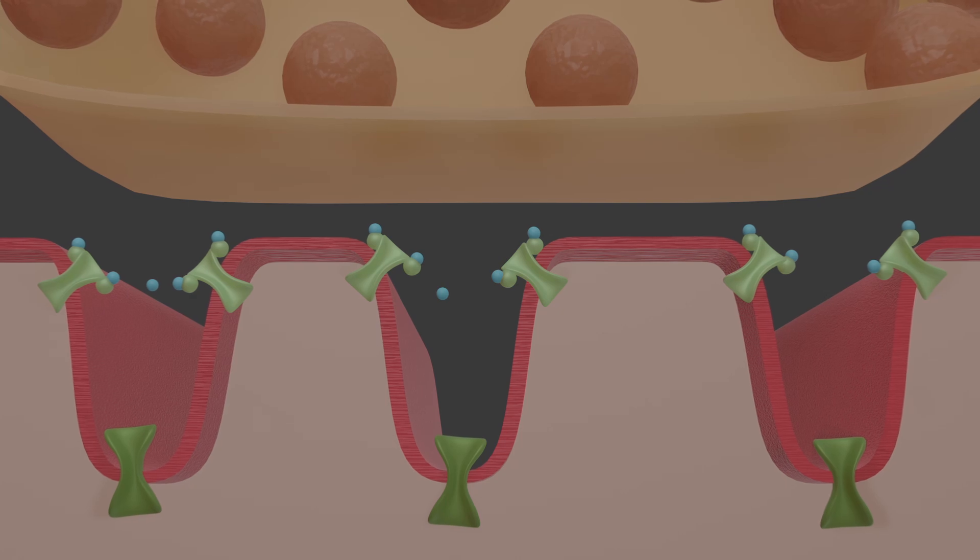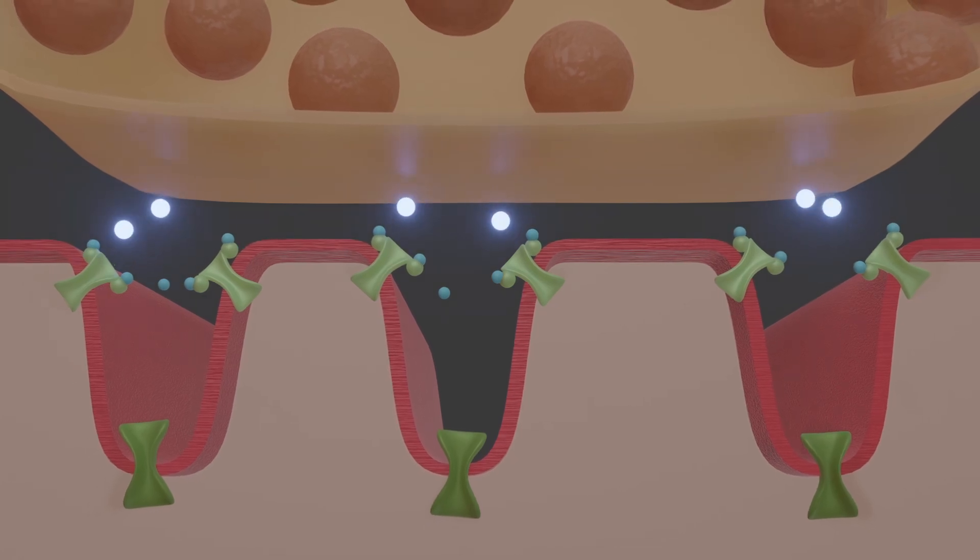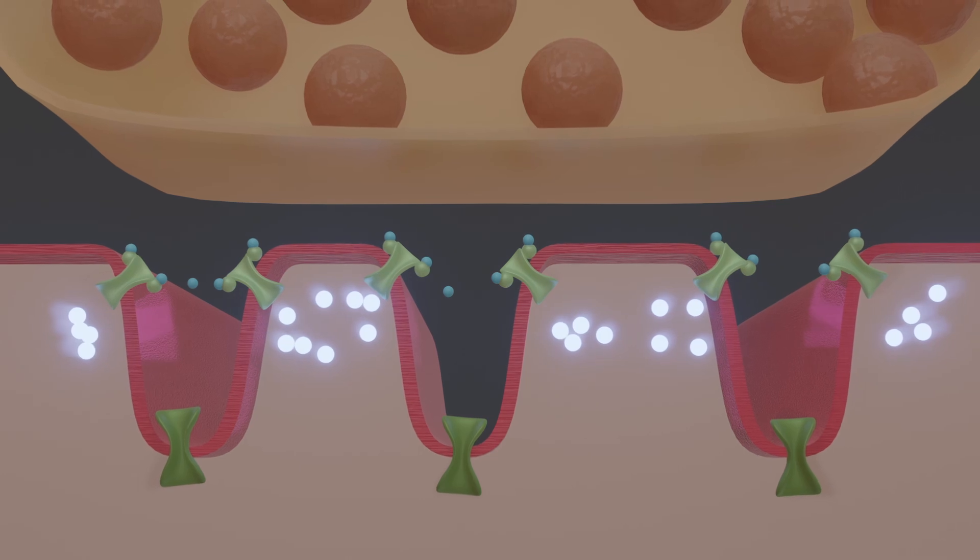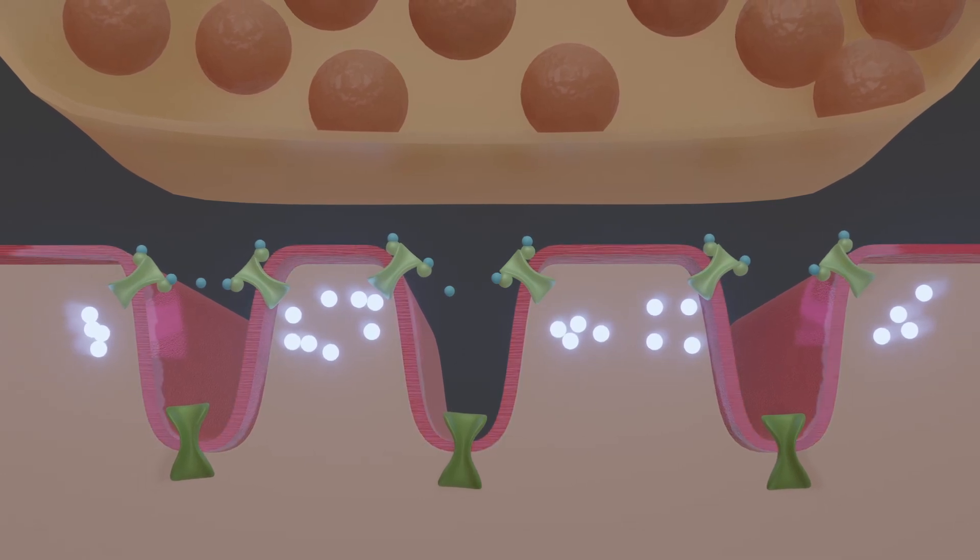Each of these receptors has two binding sites. If both are occupied, the coupled ion channel opens and sodium ions flow into the muscle cell. This creates what is known as an end plate potential.